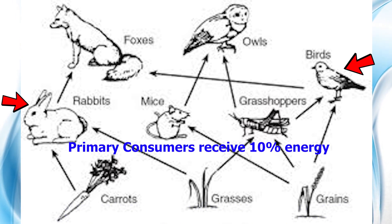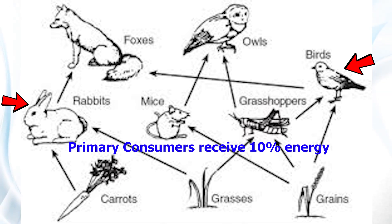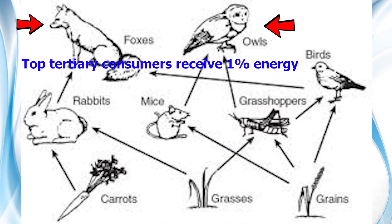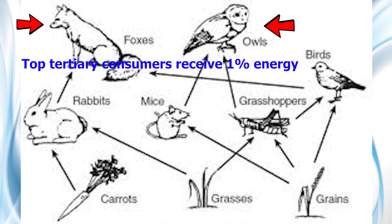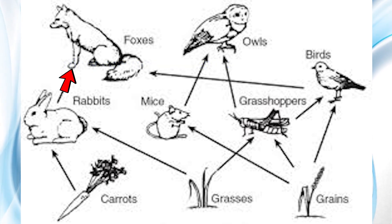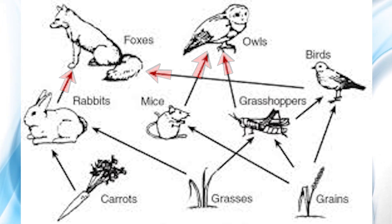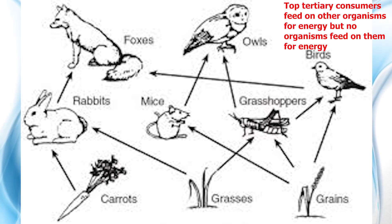If we go to the next level up, the primary consumers — which are the rabbits, mice, grasshoppers, and birds — eat the producers and only receive 10% of the energy. As we move up to the top tertiary level with the foxes and owls, they only receive 1% of the energy from the consumers. We call the foxes and owls top tertiary consumers in this food web because arrows point to them but no arrows point away from them, meaning they feed on other organisms but no other organism feeds on them.